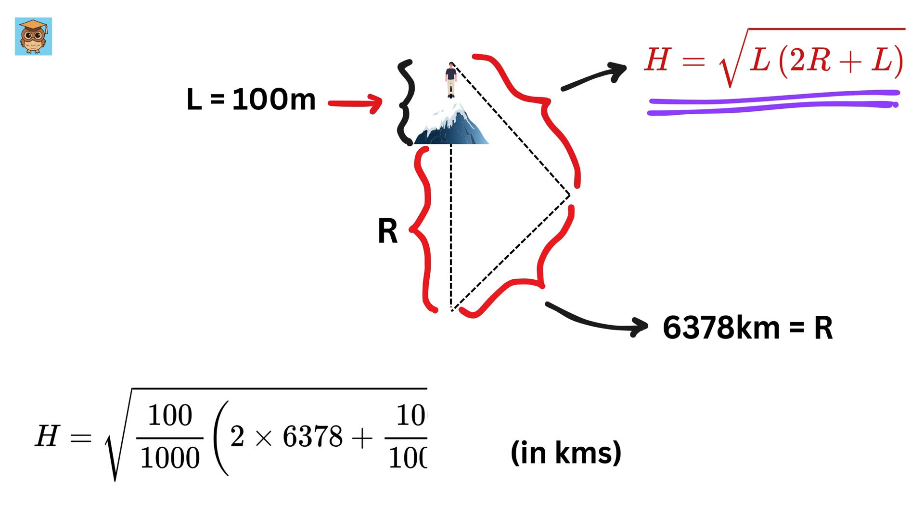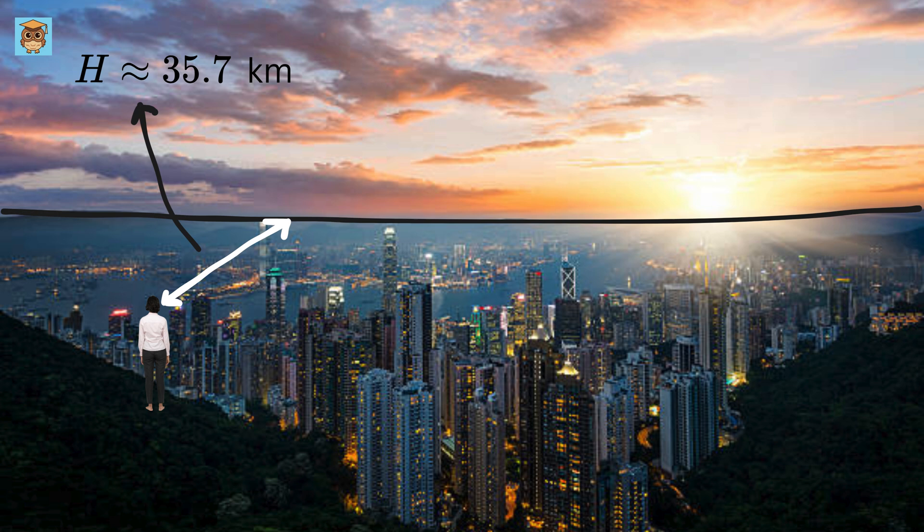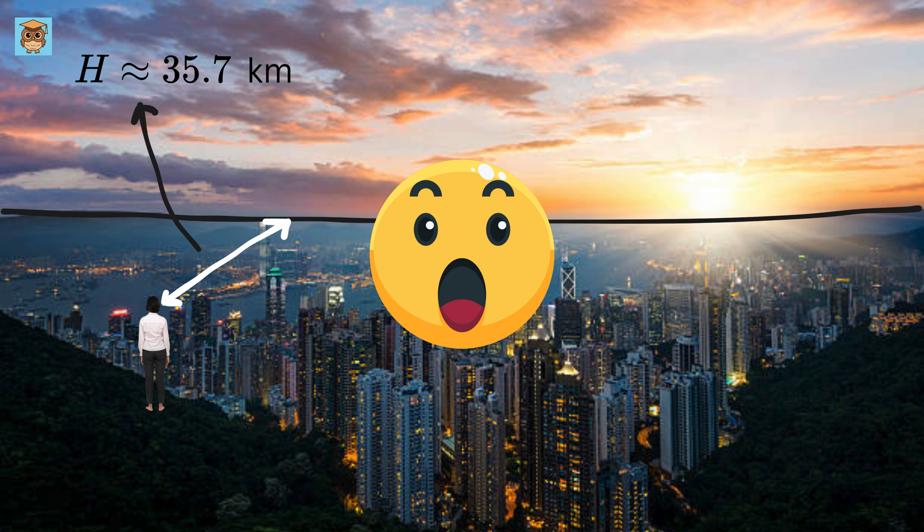Now, when we substitute the values of R and L, we get H as nearly 35.7 kilometers, which is about the distance between two small towns or across a large part of a city. That's a big difference.